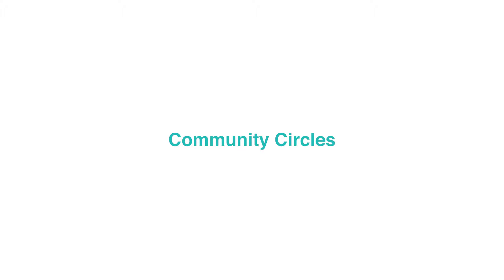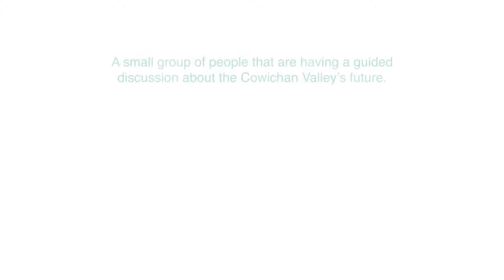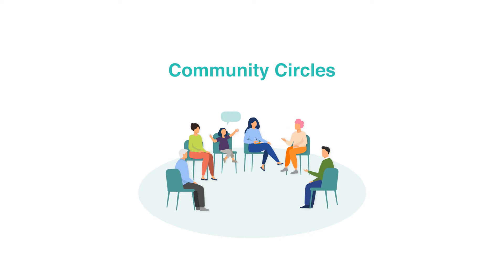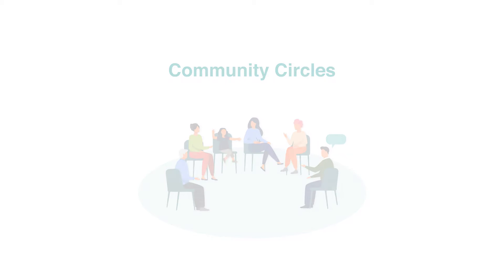One of the ways we are asking for your thoughts is through community circles. A community circle is a small group of people having a guided discussion about the Cowichan Valley's future. It's a way for community members to gather on their own time and develop ideas towards the official community plan and the future of the Cowichan Valley. It's open to all ages and inclusive for anyone to participate.